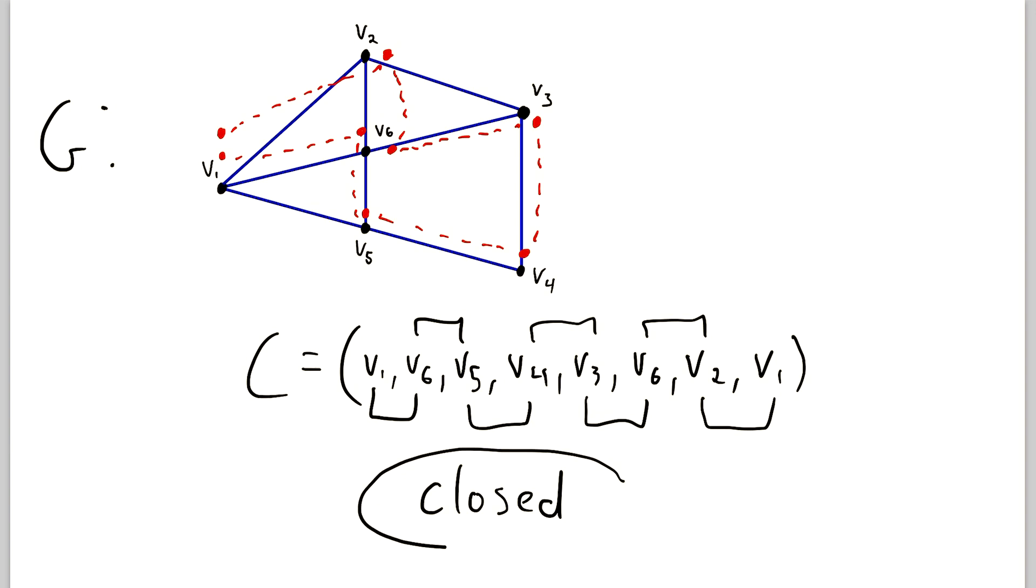You might remember that we say a trail is closed if its first and last vertex are the same. And we call those the endpoints. So if its endpoints are the same, it's a closed trail. So then finally, what is a circuit? A circuit is a closed trail of length three or more.